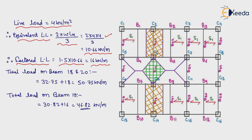Total load on beams 18 and 20 equals 32.75 + 18 = 50.75 kN per meter. Total load on beam 19 equals 30.82 + 16 = 46.82 kN per meter. In this way, we had calculated UDL acting on beam from slab including live load and dead load.